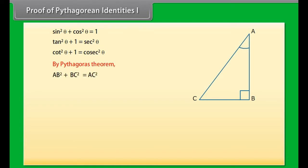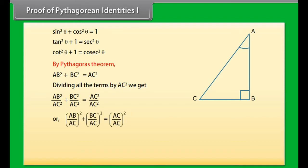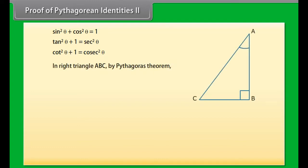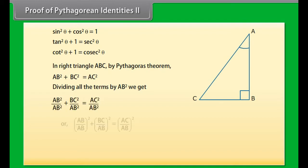Proof of Pythagorean identity 1: We take a right-angle triangle ABC. By the Pythagorean theorem, AB squared plus BC squared is equal to AC squared. Dividing each term by AC squared, we get (AB/AC)² plus (BC/AC)² equals (AC/AC)², that is cos²A plus sin²A equals 1. This is true for all A such that 0° ≤ A ≤ 90°, so this is a trigonometric identity.